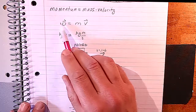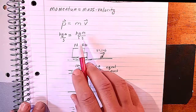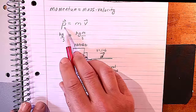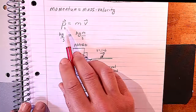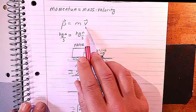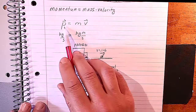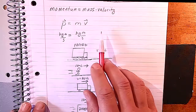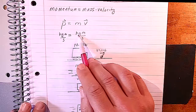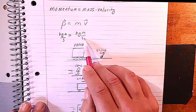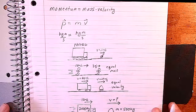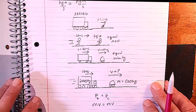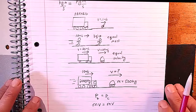The symbol for momentum is a lowercase p, with a vector symbol over the top because momentum is a vector, which means direction matters. The direction that the object is traveling — its velocity — means that its momentum has the same direction as the velocity. The units are just kilograms times meters per second; it doesn't have a special name.